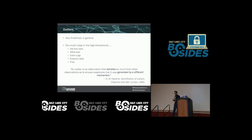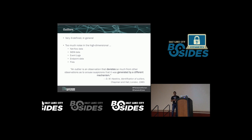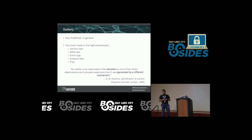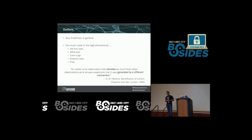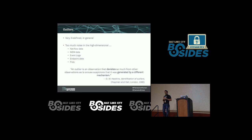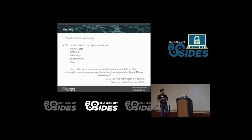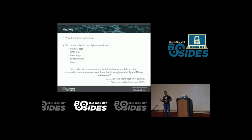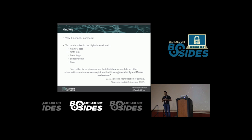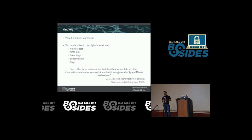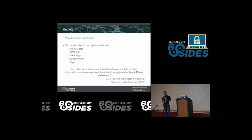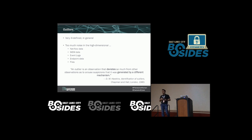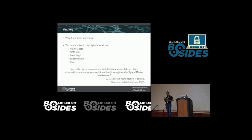Outliers in general are very ill-defined. People find it very hard to define outliers, especially in the field of security. There is a lot of noise because the data is in very high dimensions. This can be NetFlow data, SIM data, event logs, endpoint data, files — any kind of security data is one, heterogeneous, and two, in ridiculously high dimensions, so the meaning of outliers somehow gets lost in this context.